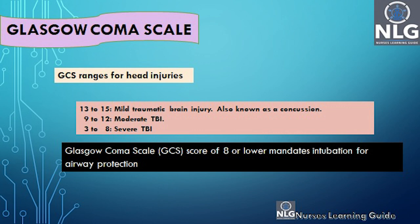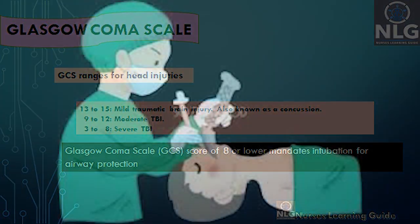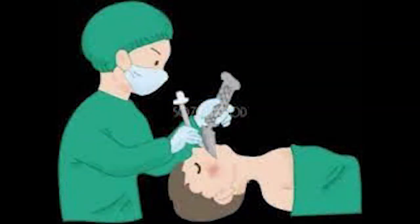An important point to remember: a Glasgow Coma Scale score of 8 or lower mandates intubation for airway protection. As nurses, we commonly think of it as below 9, but the precise threshold is 8 or lower. This is the situation which requires us to proceed with intubation.